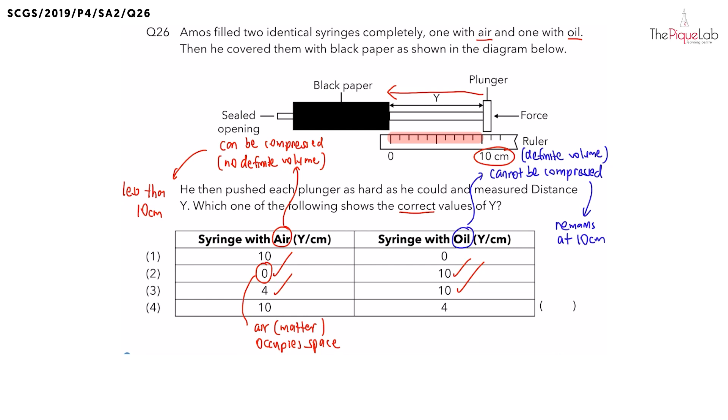So if the plunger is pushed until 0 cm, this means the air is not occupying space. So can option 2 be the answer? The answer is no, which means the only possible answer should be option 3.